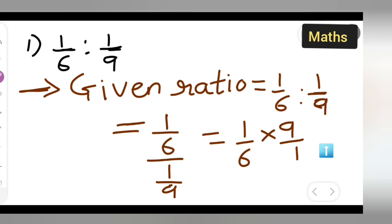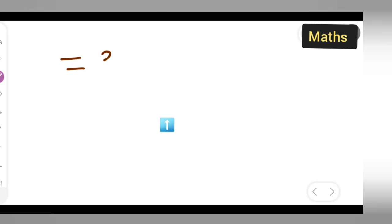So you can cancel whatever is getting cancelled. 3 times 3 is 9, 3 times 2 is 6. So what will be your answer? 3 upon 2. And that 3 upon 2 you can write as 3 is to 2, or 3 ratio 2.